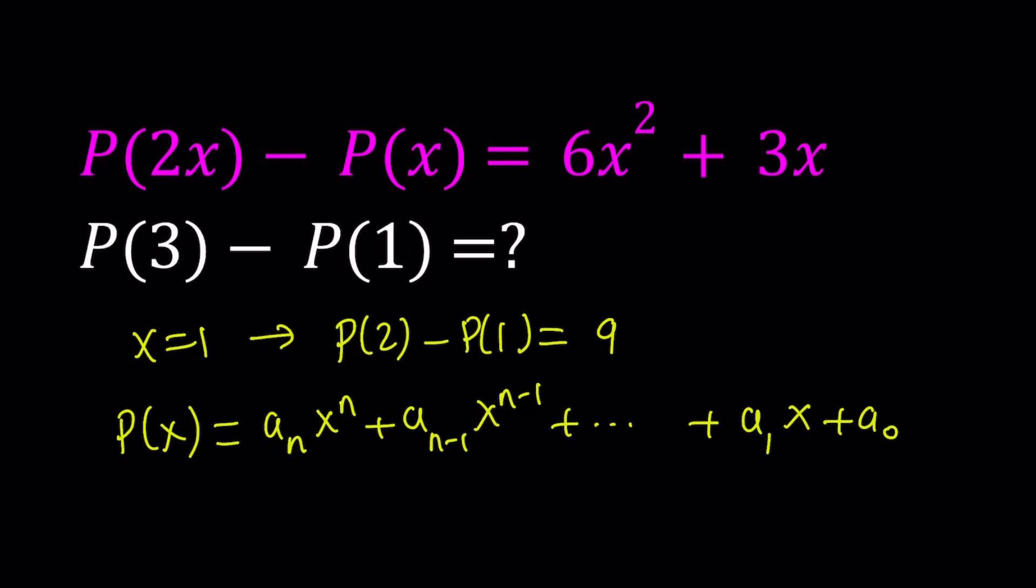But this is a polynomial of degree n. So the biggest question here is, what degree must P of X have? And here's my claim. Because the difference is quadratic here, and P of 2x and P of X should have different leading coefficients. What do I mean by leading coefficient? The leading coefficient of a polynomial is basically a sub n, the coefficient of the term with the highest power.